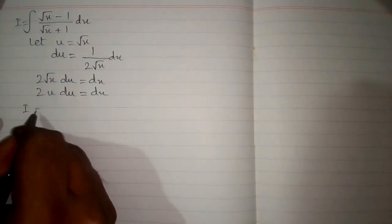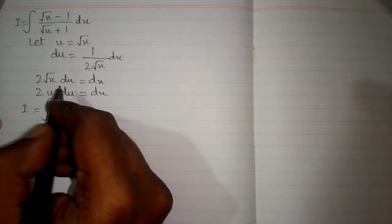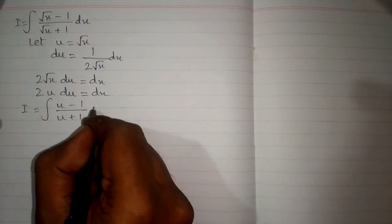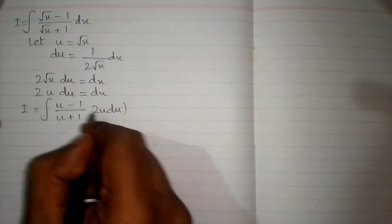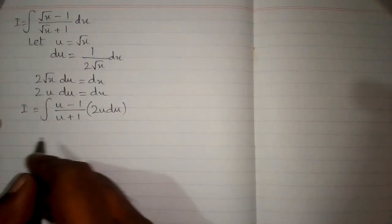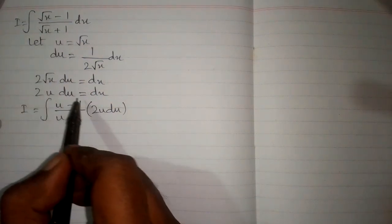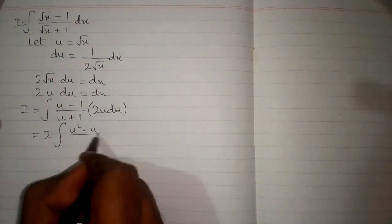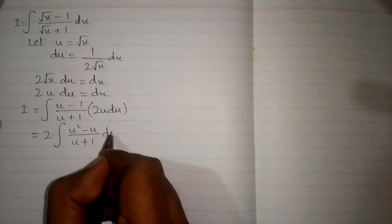The above integral, suppose this integral is I, can be written as the integral of u minus 1 upon u plus 1, multiplied by 2u du. Because we can put the value of u, which is square root of x, in place of square root of x, and in place of dx we put 2u du. So we have 2 times u squared minus u upon u plus 1, du.